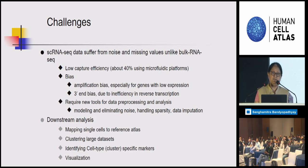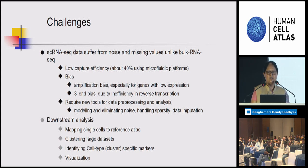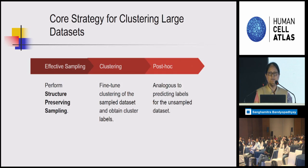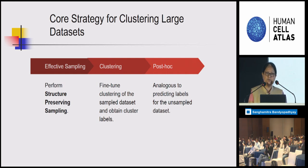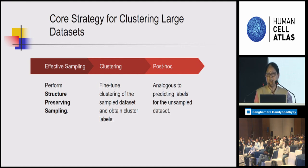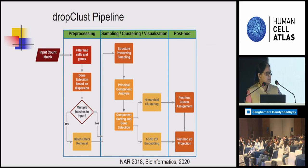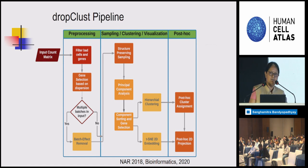Downstream analysis serves many purposes: mapping single cells to reference atlases, clustering large datasets, identifying cell types and specific markers, and visualization. Since I'm going to speak on clustering of single-cell RNA-seq data — very high-dimensional, very large datasets — what we intend to do is first sample the data, then cluster it, and then do a post-hoc assignment of the remaining data points that were not taken in the sample. This is the essential pipeline of our method, which we call DropClust, with the next version called DropClust 2.